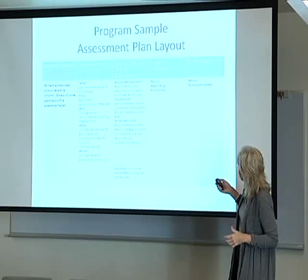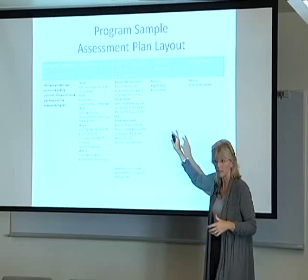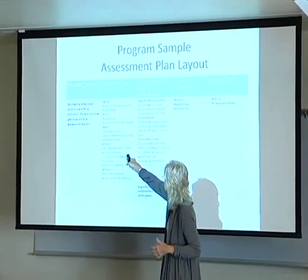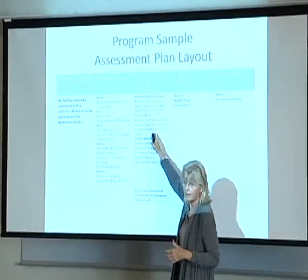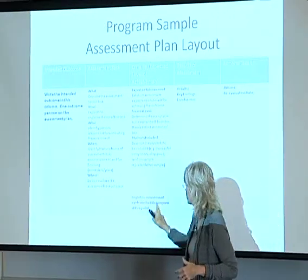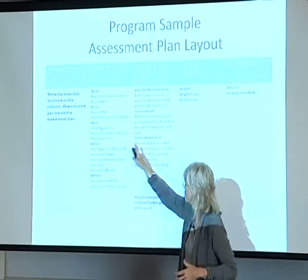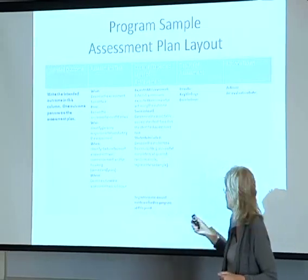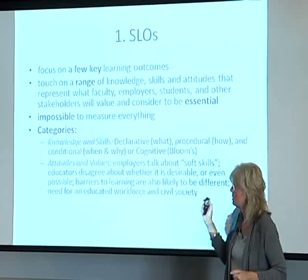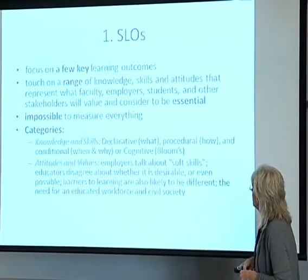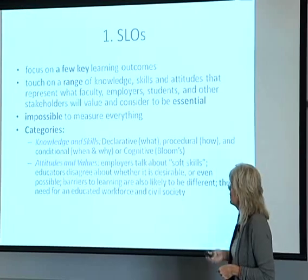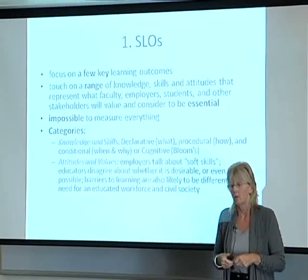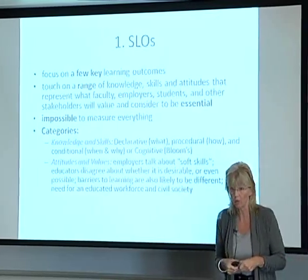Here's a visual of the assessment plan — if you've done the courses, it's the same thing. You have the outcomes here, the assessment task with all of the prompts, and then the criteria with all of the prompts. Then you start to collect the evidence. But getting the first three columns done is all we need right now. Column number one: the SLOs. Focus on a few key learning outcomes — we're recommending two to five per program. The more you do, the more work you do. That seems to be a reasonable range.